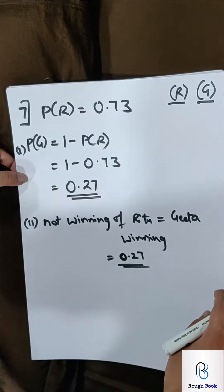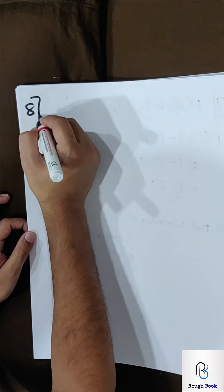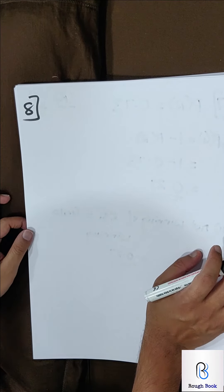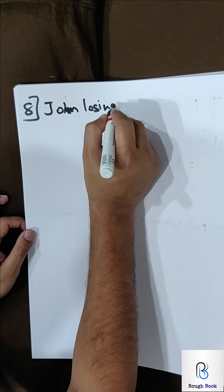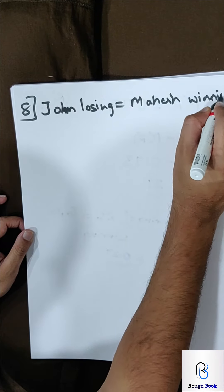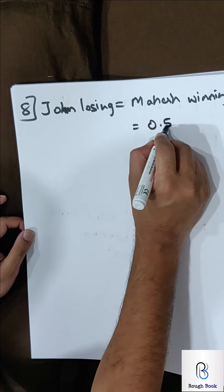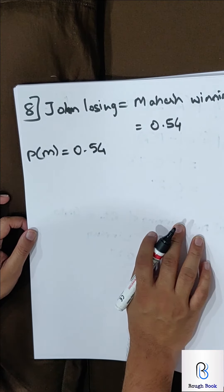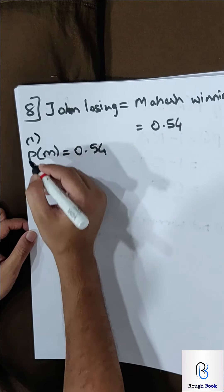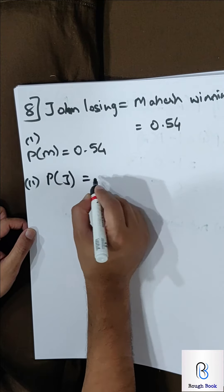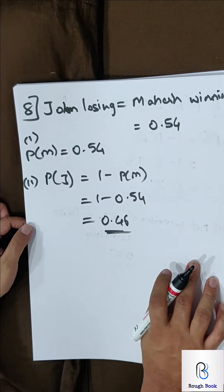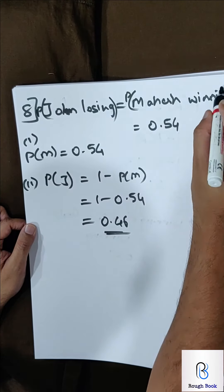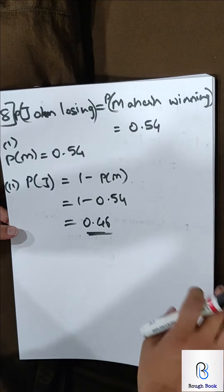Don't expect such simple questions in the exam — they are just making you understand the concept of 1. Sum number 8: In a race between Mahesh and John, the probability of John losing the race is 0.54. John losing equals Mahesh winning — so probability of Mahesh = 0.54. First question: probability of winning of Mahesh = 0.54. Second: probability of John winning = 1 minus probability of Mahesh = 1 - 0.54 = 0.46.